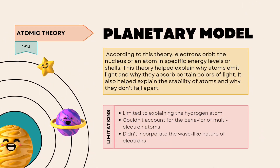According to the planetary model, electrons orbit the nucleus of an atom in specific energy levels or shells. This theory helped explain why atoms emit light and why they absorb certain colors of light, and also explained the stability of atoms. Limitations include: it was limited to explaining the hydrogen atom, couldn't account for the behavior of multi-electron atoms, and didn't incorporate the wave-like nature of electrons.